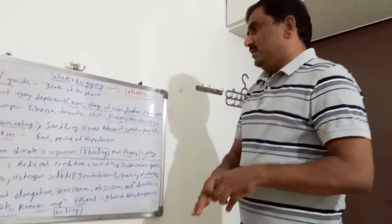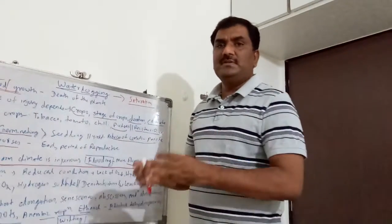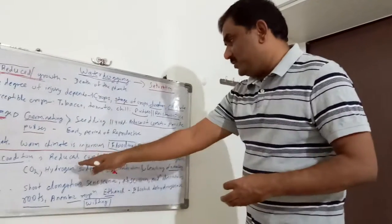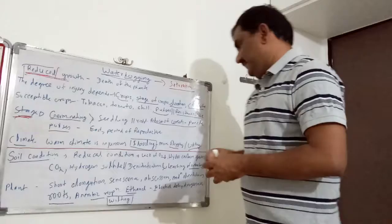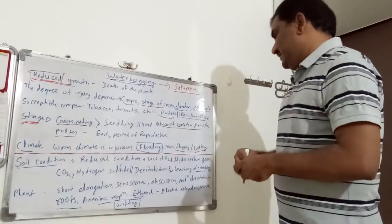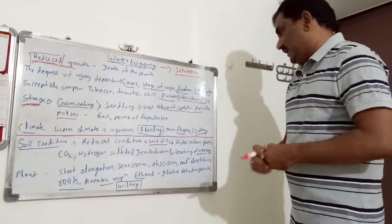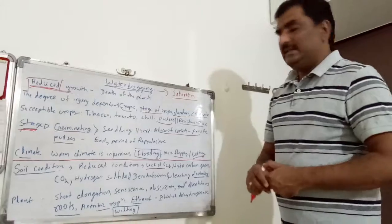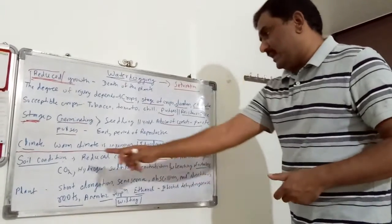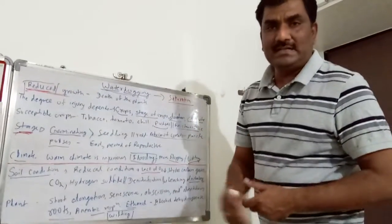Regarding the impact of waterlogging on soil: aerobic condition is transferred to anaerobic condition. This reduced condition is called a reduction of redox potential of the soil — there is less oxygen and it cannot exchange oxygen. This lack of oxygen affects respiration. Simultaneously, there is an increase of hazardous gases like hydrocarbons, carbon dioxide, and hydrogen sulfide, leading to toxicity to the plants, particularly to the roots.